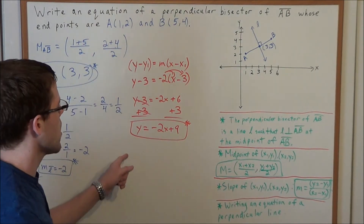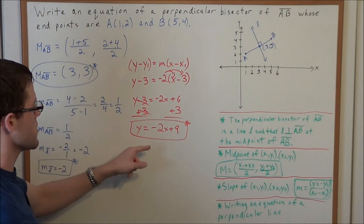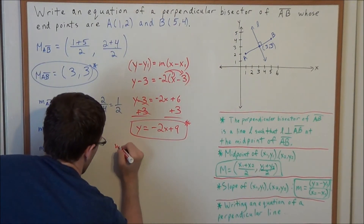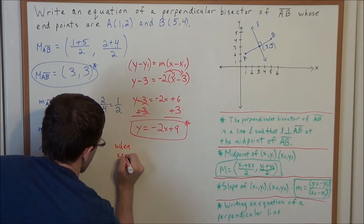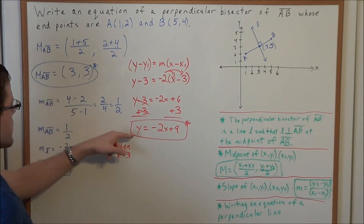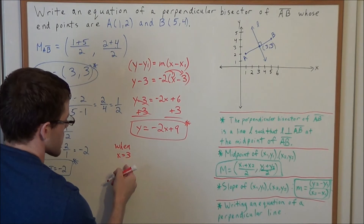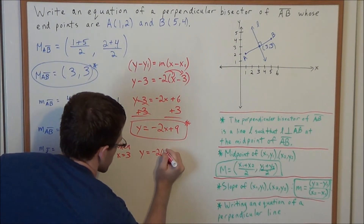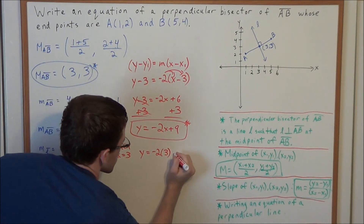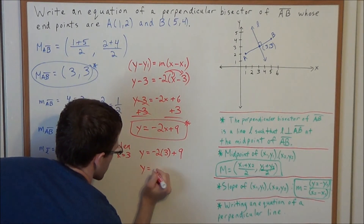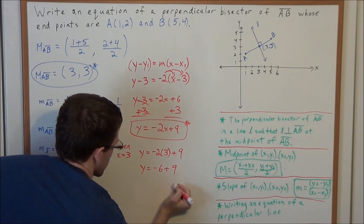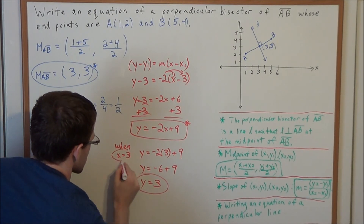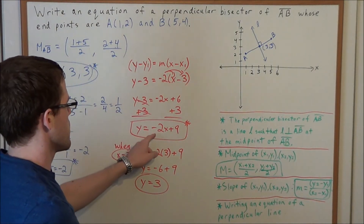Now if this were a test and you had time, I would advise plugging the point (3, 3) into this equation to make sure all the math was done right. When x equals 3, we have y equals negative 2 times 3 plus 9, which gives y equals negative 6 plus 9, and negative 6 plus 9 equals 3. This tells us that the point (3, 3) is definitely on this line.